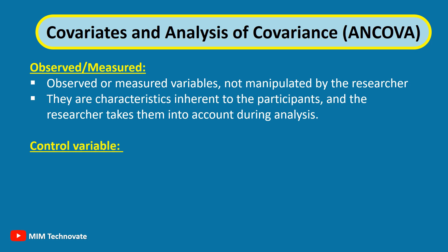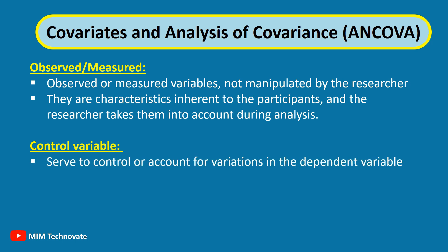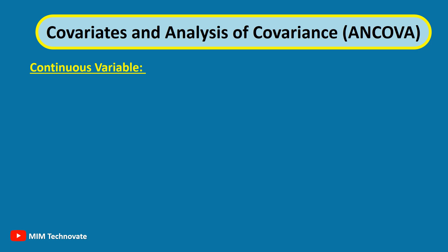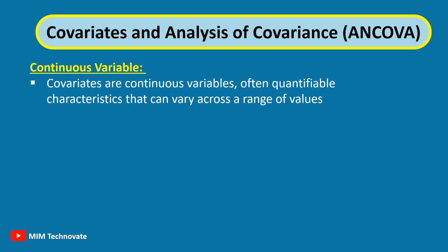Control variable: Covariates are controlled variables that serve to control or account for variations in the dependent variable. They help ensure that differences observed in the dependent variable are more likely to be related to the independent variable of interest. Continuous variable: Covariates are continuous variables — often quantifiable characteristics that can vary across a range of values.